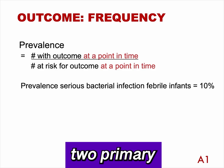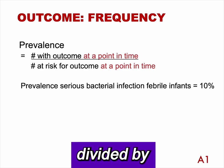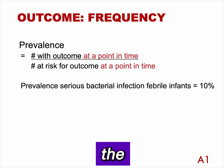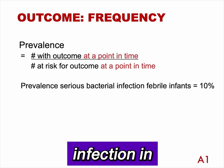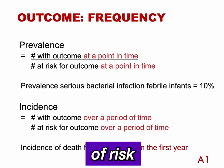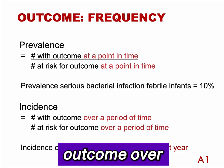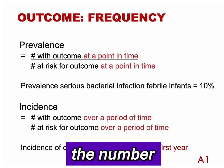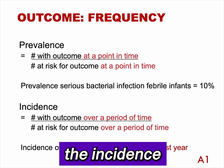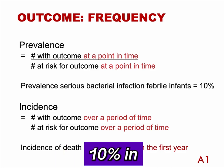There are two primary measures of risk frequency. Prevalence is the number with the outcome at a point in time divided by the number at risk for the outcome at a point in time. For example, the prevalence of serious bacterial infection in febrile neonates is 10%. Incidence is a measure of risk which includes a time interval: the number with the outcome over a specified time interval divided by the number at risk over that interval. For example, the incidence of death from acute lymphoblastic leukemia is 10% in the first year.